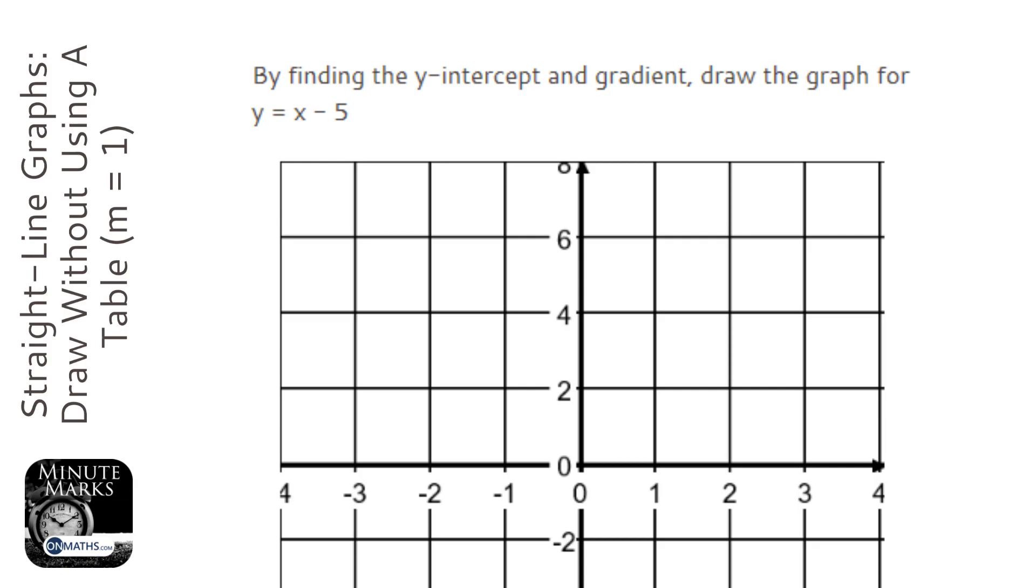We're asked to draw the graph for y equals x minus 5, but we're asked to do it by finding the y-intercept and the gradient.